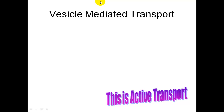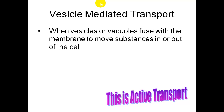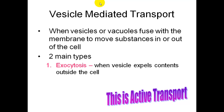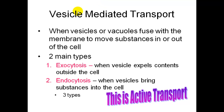The first type is vesicle-mediated transport. This is when vesicles or vacuoles are fusing with the cell membrane to move certain substances into the cell or out of the cell. There are two main types: exocytosis, when the vesicle is getting rid of contents to outside the cell, and endocytosis, when vesicles are bringing things into the cell.